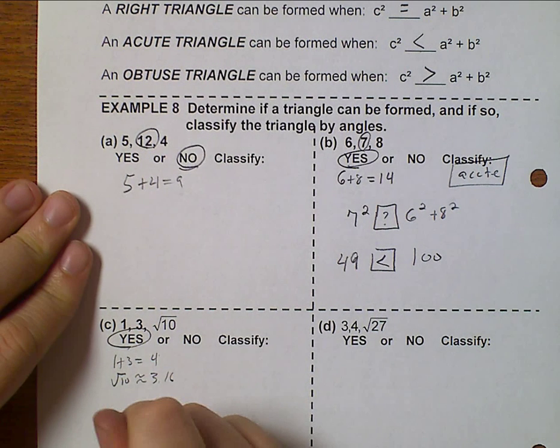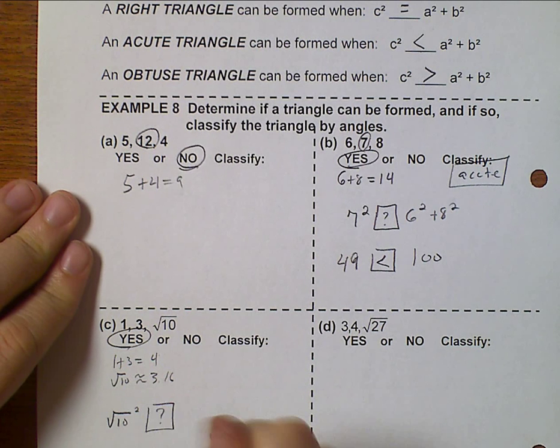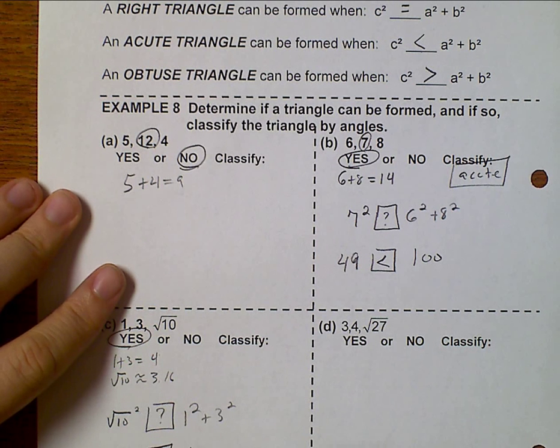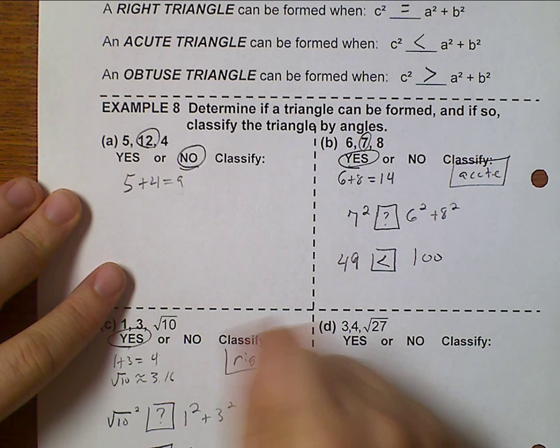Now we need to classify it. So the square root of 10 squared relates how to 1 squared plus 3 squared? Well, that's 10. And 1 plus 9 is 10. Well, they equal, and so this is a right triangle.